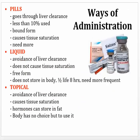Looking at ways of administration: pills have to go through the liver, only about 10% is used, it's usually in the protein-bound inactive form, and it causes tissue saturation — over time you need more hormone to get the same beneficial effect. Liquid has advantages: it avoids liver clearance, doesn't have to go through the gastrointestinal tract, and doesn't cause as much tissue saturation. It comes in the free form, is used rather quickly, does not store in the body, and has a half-life of about eight hours — so you need it more frequently.